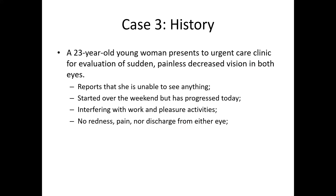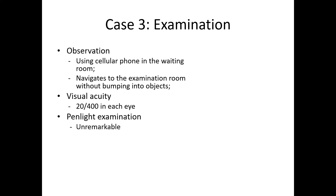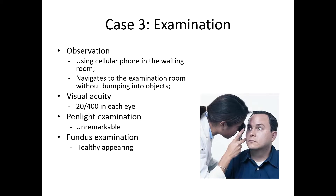Case 3: A 23-year-old woman presents to the urgent care clinic for evaluation of sudden, painless, decreased vision in both eyes. She reports that she is now unable to see anything, and that it started over the weekend but has progressed, interfering with her work and pleasure activities. She is very concerned. However, there is no redness, pain, nor discharge from either eye. The urgent care practitioner observes the patient using her cellular telephone in the waiting room. She navigates to the examination room without bumping into objects. Her visual acuity measures 20/400 in each eye. Penlight examination of the anterior segment is unremarkable, and the fundus examination by direct ophthalmoscopy is healthy.